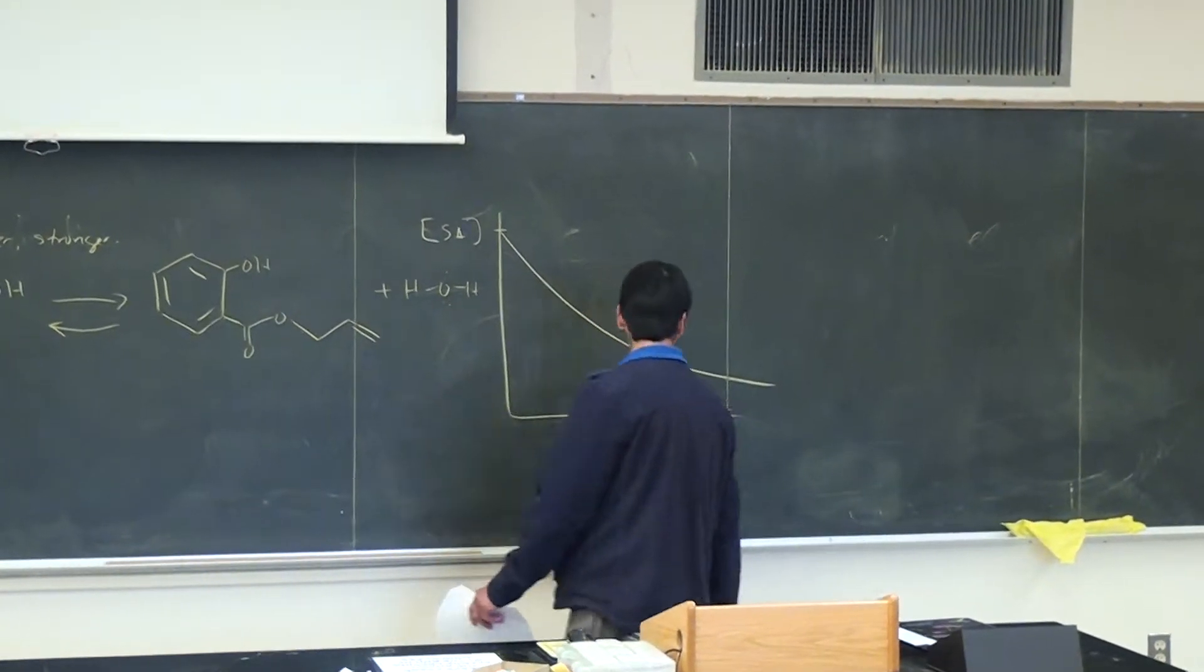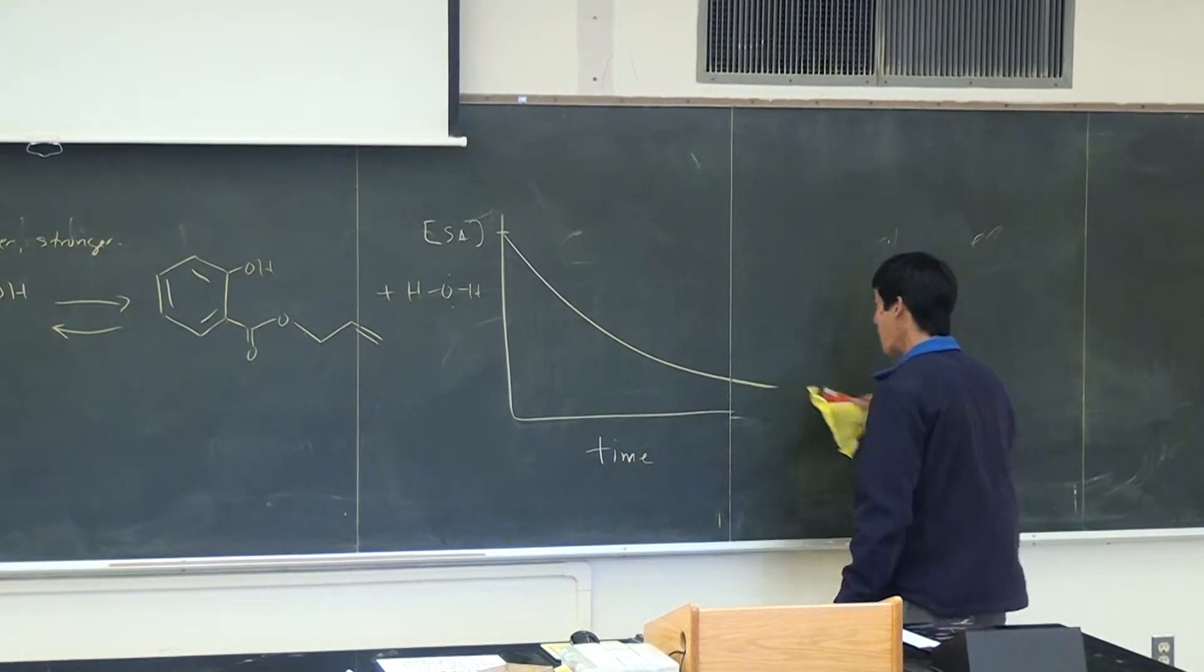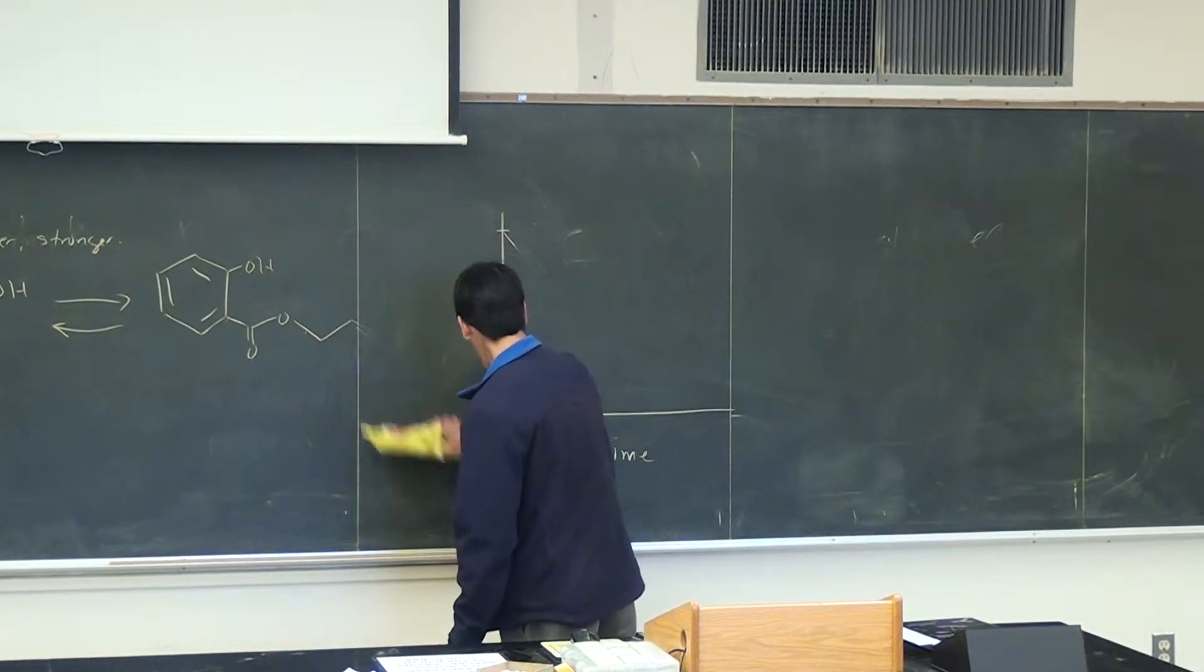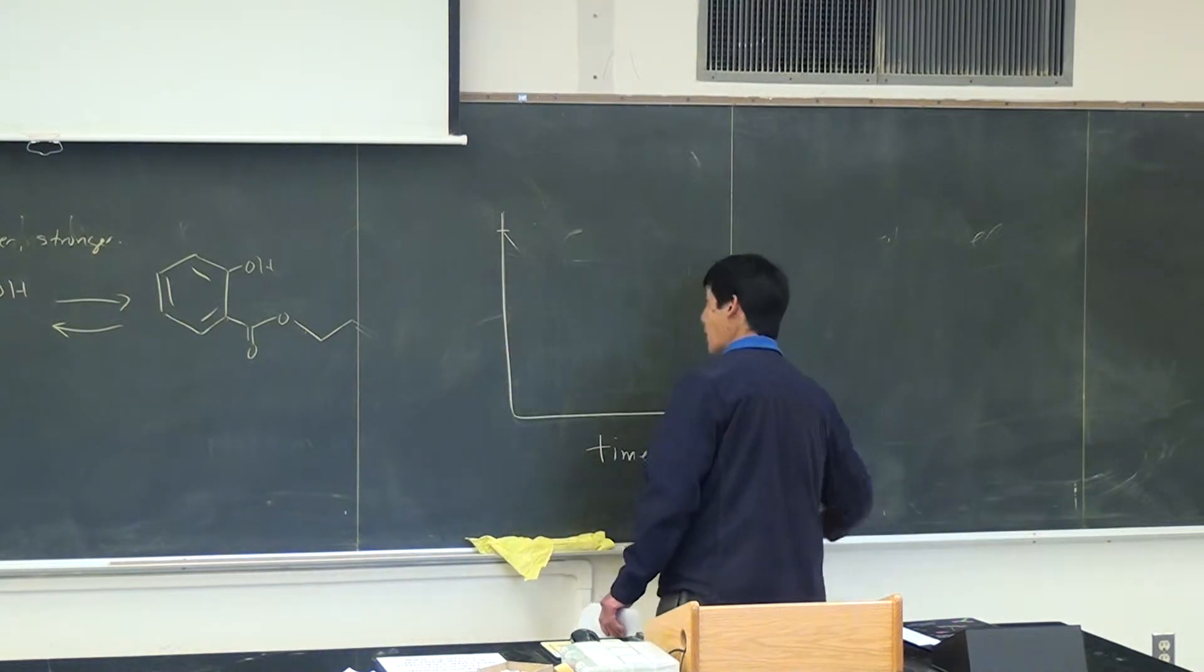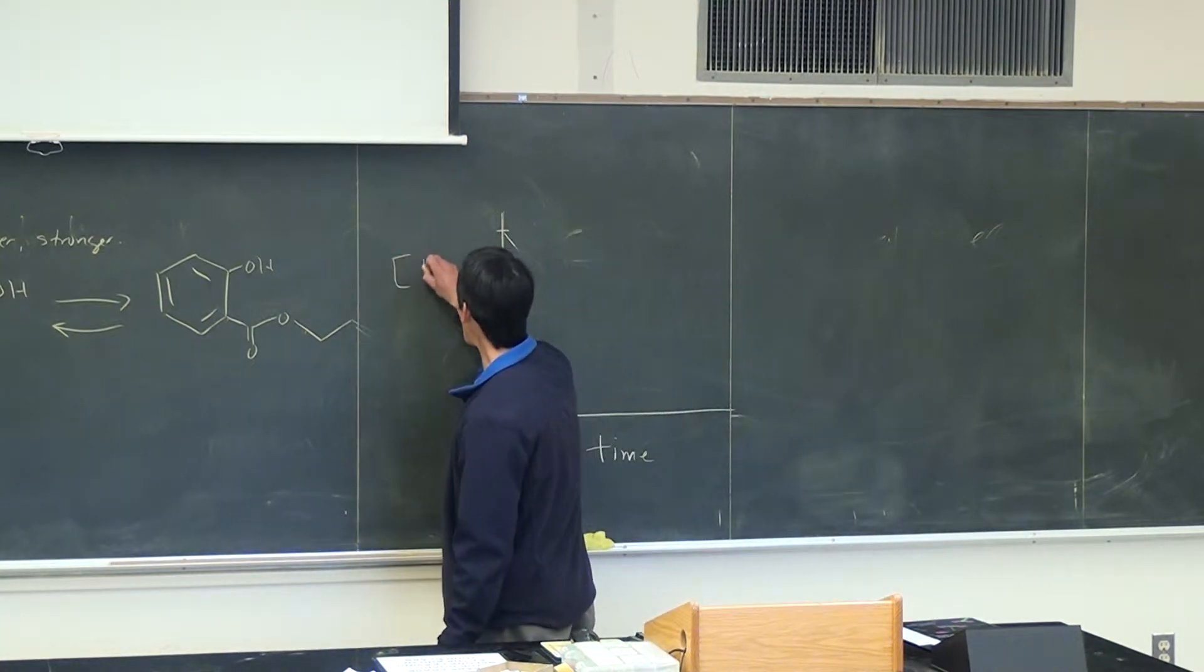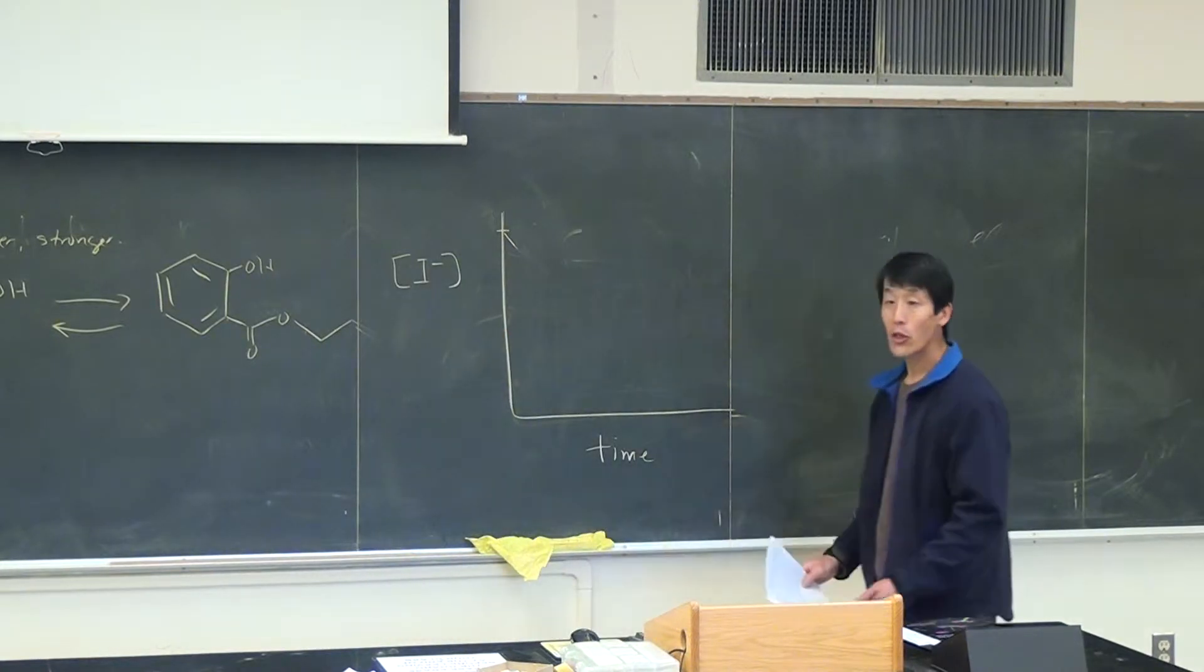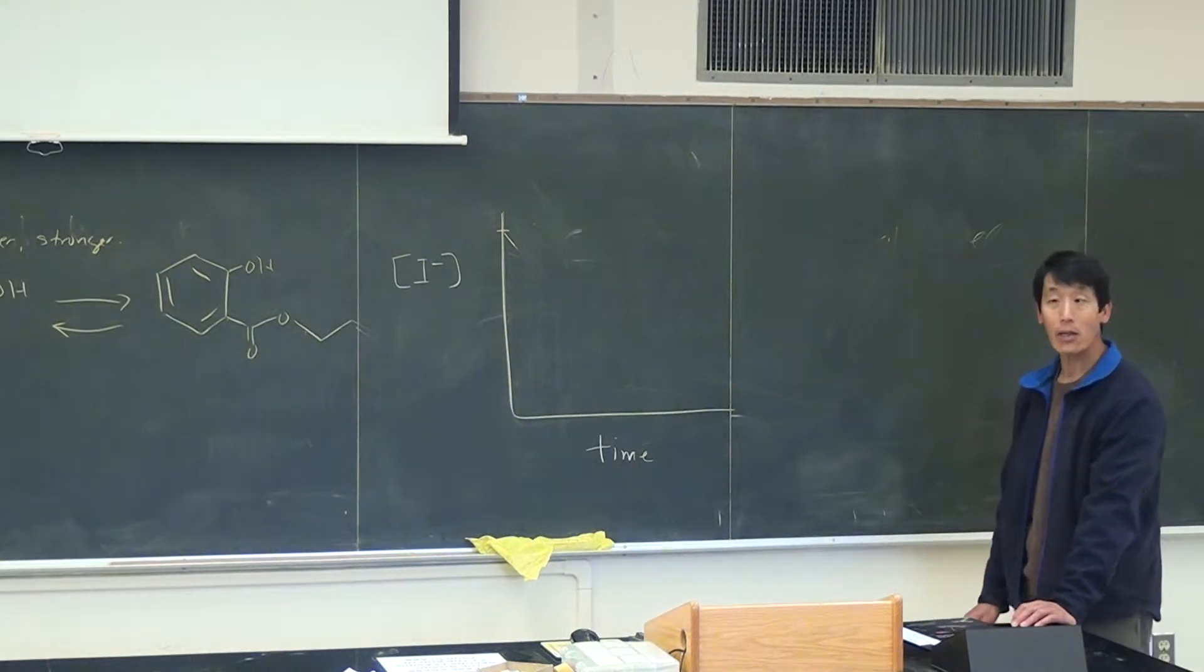So if we were to draw it, you were not asked to do this, but one way of looking at it is by looking at this concentration versus time graph. So if we were to plot the concentration of iodine versus time, what would this graph look like for the iodine clock reaction?